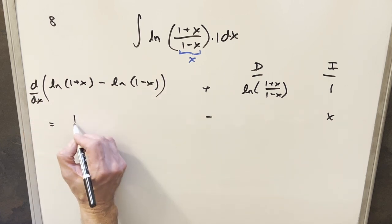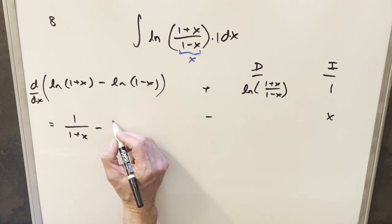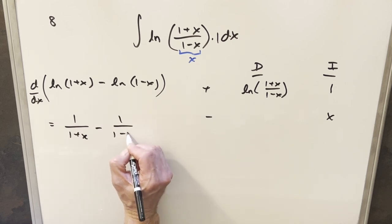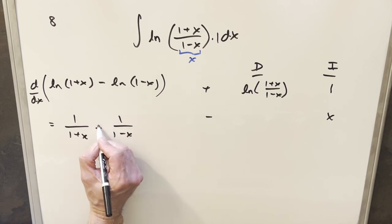The derivative of this is going to give me 1/(1+x). Then derivative here is going to give me 1/(1-x). But with chain rule we'll have a minus on the x. So we'll take a minus out, turn that to a plus.